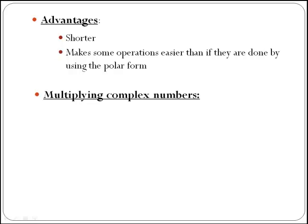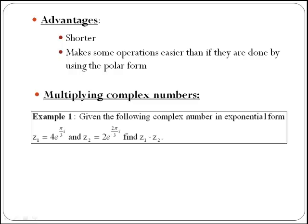Let's think about multiplication of complex numbers once we know modulus and angle rather than working in Cartesian coordinates. Have a look at the following example. Given the following complex numbers in exponential form: z1 equals 4e^(π/3i) and z2 equals 2e^(2π/3i), find z1 times z2.